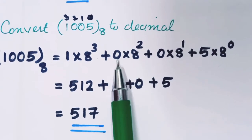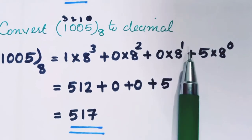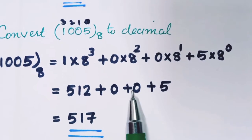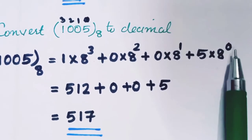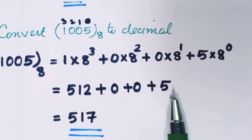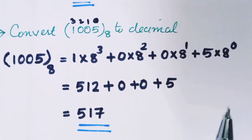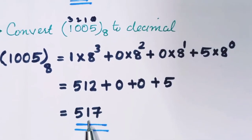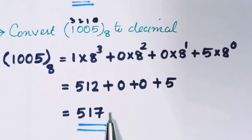We multiply 0 × 8 raise to 2 = 0, 0 × 8 raise to 1 = 0, and 5 × 8 raise to 0 = 5 × 1 = 5. So 512 + 0 + 0 + 5 = 517. The octal number 1005 is equal to the decimal number 517.